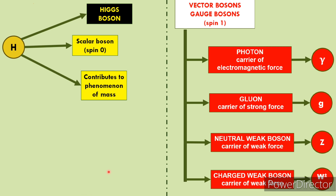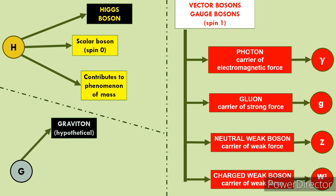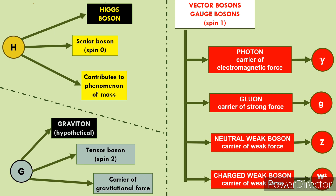Ek third type of boson hai jo ki hypothetical hai, aur use graviton kaha jaata hai. Hypothetical hai kyunki abhi proven nahi hai uska existence, lekin maana ja raha hai it can be there. Aur yeh tensor boson hai, iska spin 2 hota hai. Jaise ki naam se pata chal raha hai, graviton matlab yeh gravitational force ka carrier hai. So abhi complete iska woh nahi hai — it's just a hypothetical particle, lekin ise graviton kaha jaata hai.